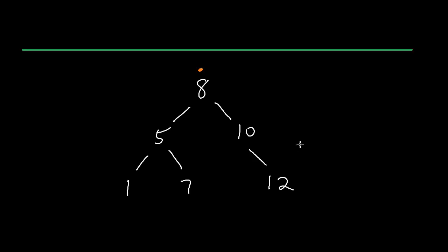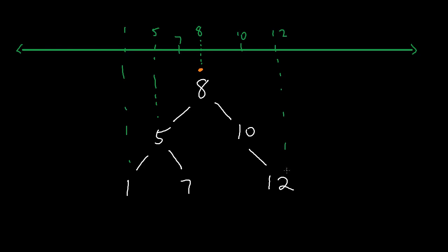Let's do a quick refresher for a binary search tree. For a BST — take 8 as an example — everything to the left has to be smaller and everything to the right has to be bigger. The same property holds for nodes 5, 1, 7, 10, and 12.